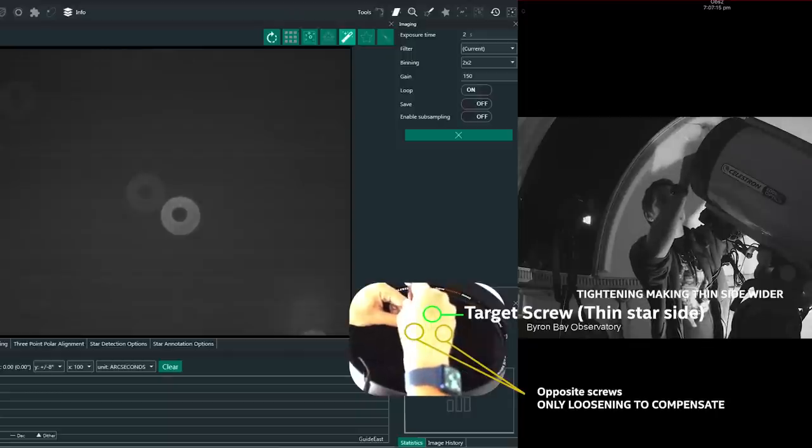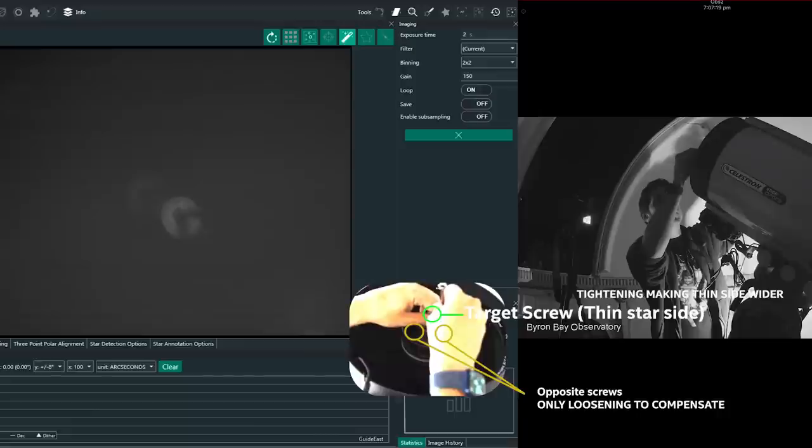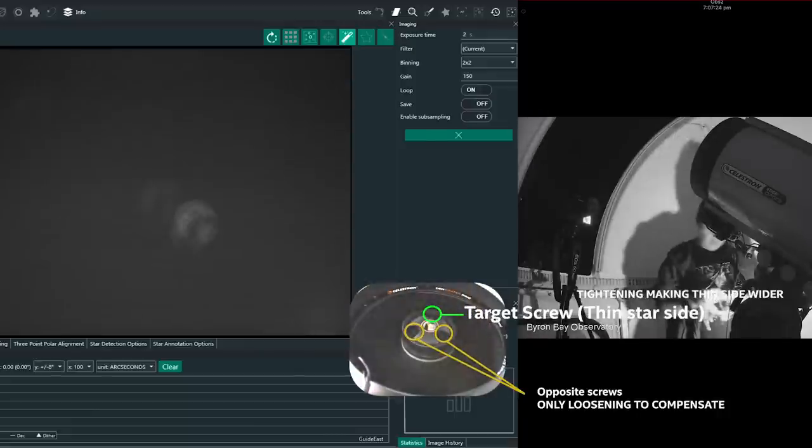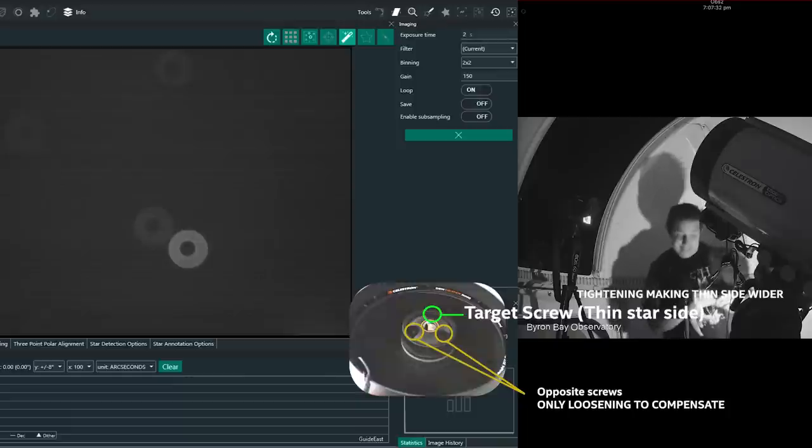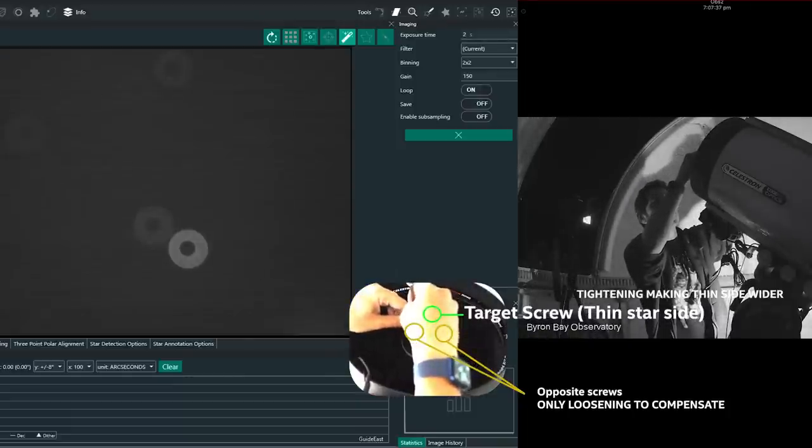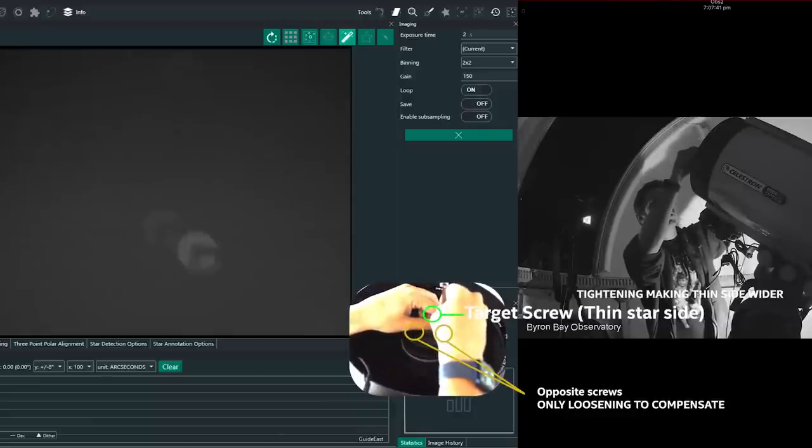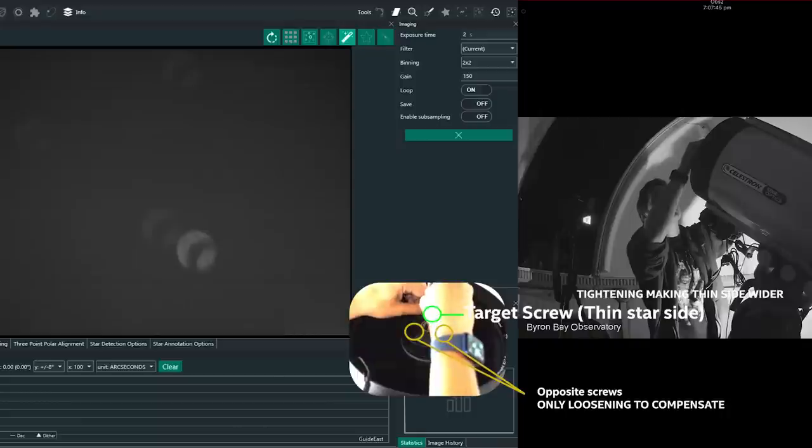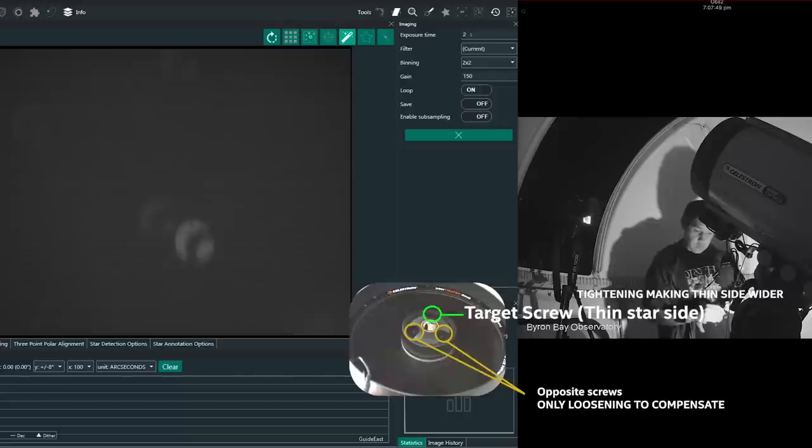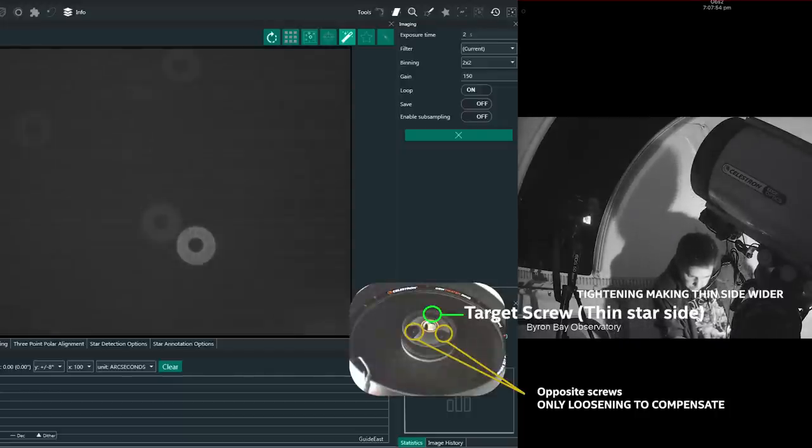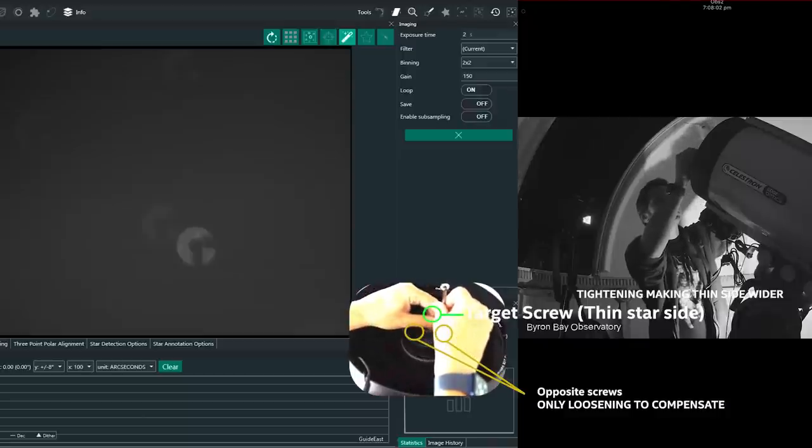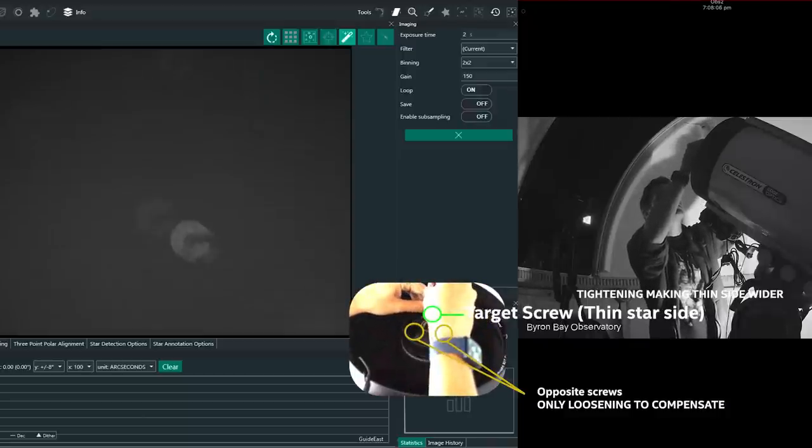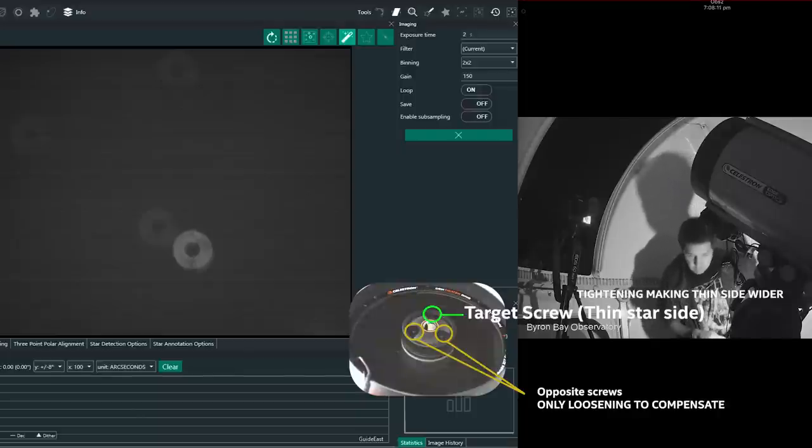Very slight improvement, so I'm going to keep going. Loosening the opposite screws and tightening the one that is close to that band. That's looking better already. Oh, that is so close. So loosening off the opposite screws. I'm going super, super gently now.